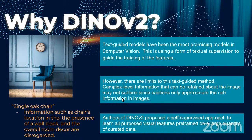For example, if we take a look at an image of a chair, when using a text-guided method, the caption might say something like 'single oak chair.' But information such as the location of the chair in the room, the presence of a wall clock, and the overall room decor are disregarded. So those are the limits of the text-guided method. The authors of DINOv2 propose a self-supervised approach to learn all visual features from a large quantity of curated data.